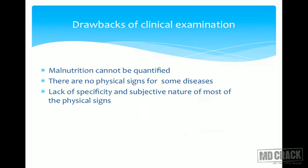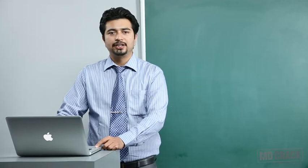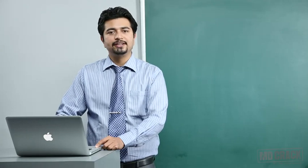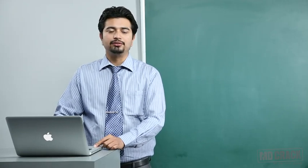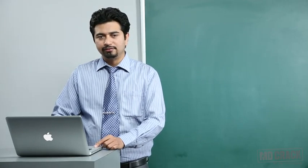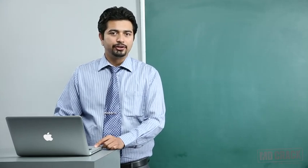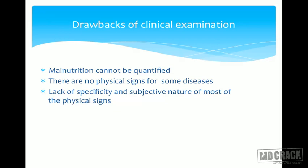The drawbacks of clinical examination are significant. There is a lot of subjective variation — every examiner may have their own expertise or opinion about a particular clinical case, and they may vary. Therefore, quantification is going to be a huge problem. There are no physical signs for some diseases; most notably, hypertension and diabetes — people have them for decades with no complaints. Lack of specificity and the subjective nature of most physical signs is another problem.